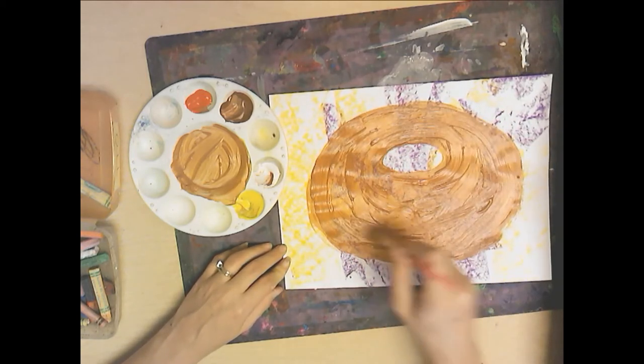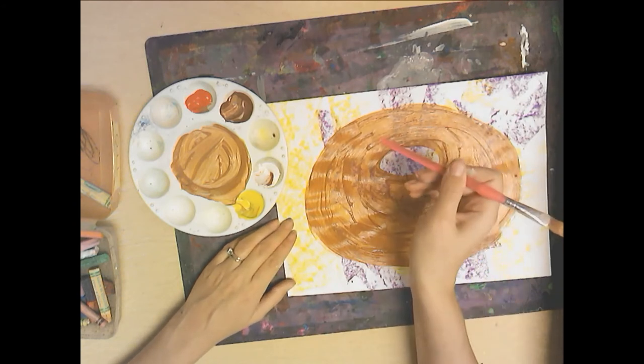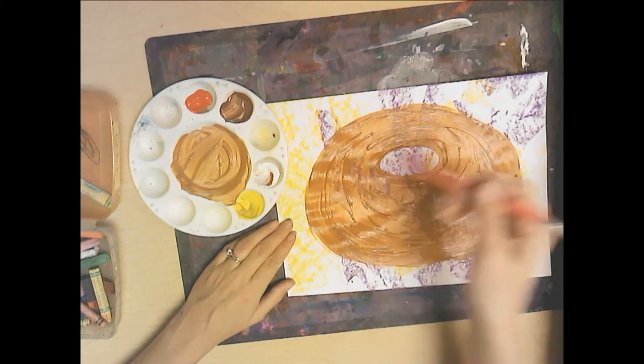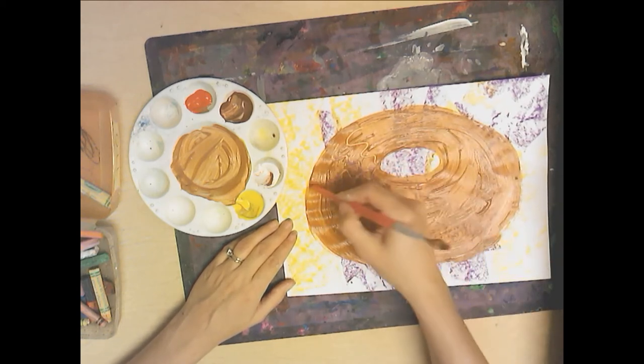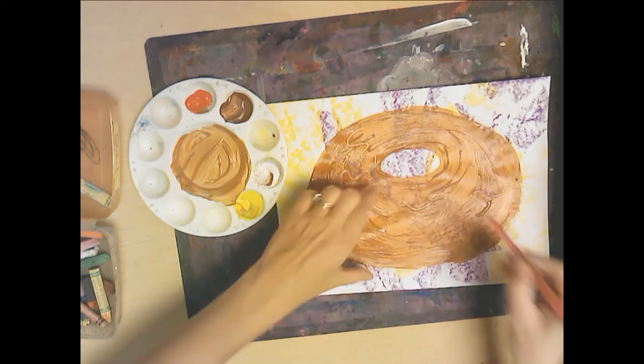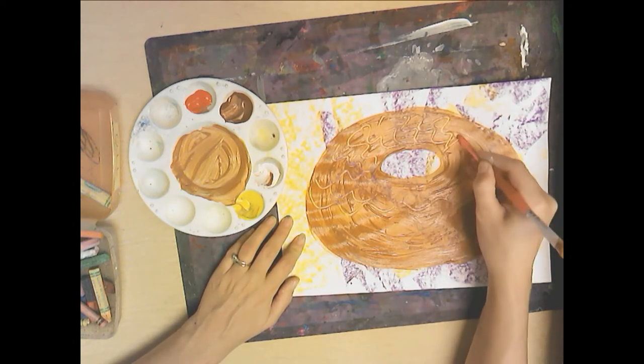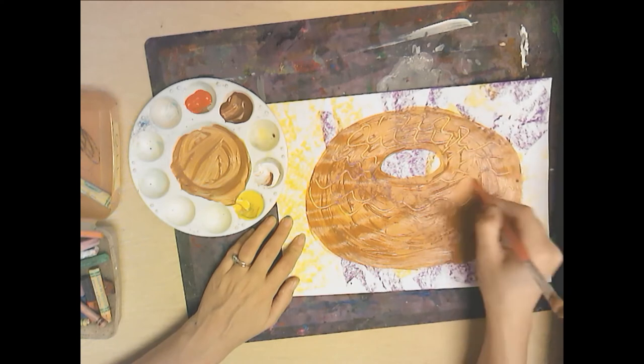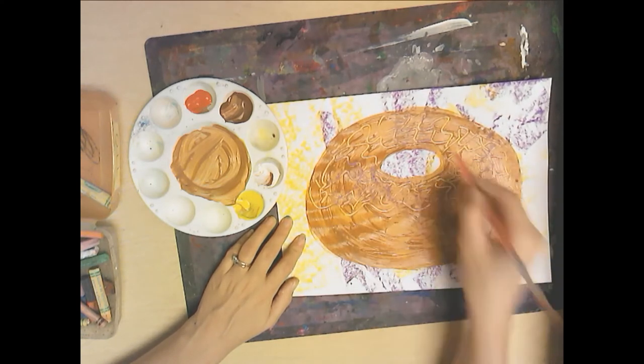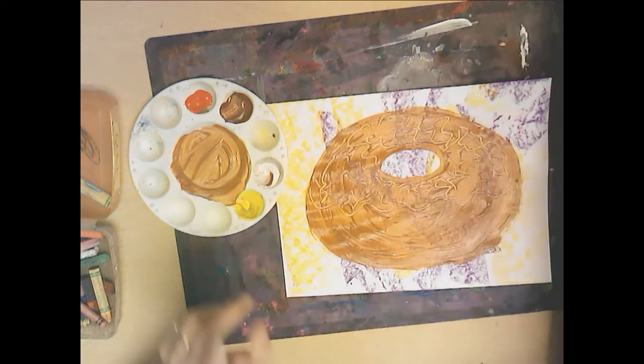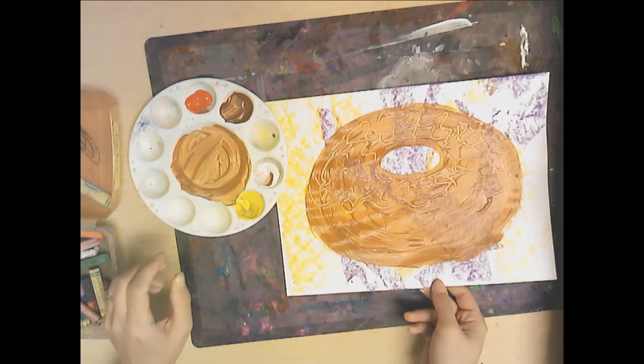From here I want you to use the back of your paintbrush and I want you to create little marks to suggest icing. Give you a line down here in the larger section and just kind of make some swirly designs. Make sure you wipe off the back of your paintbrush and clean the hairs of your paintbrush when you're finished, and we're going to let this dry.